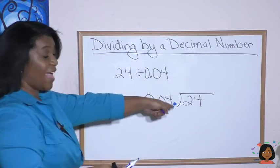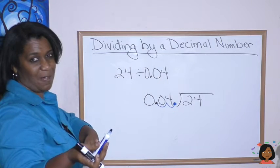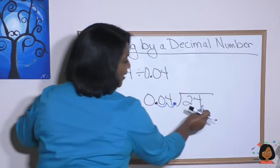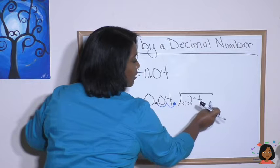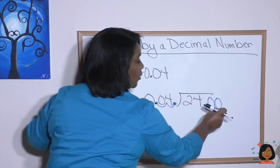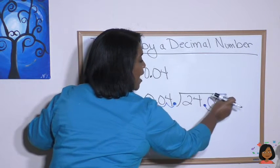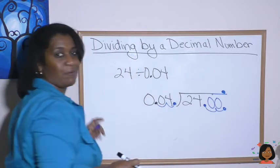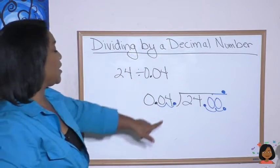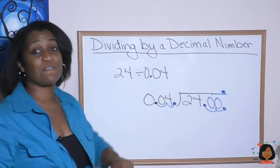But it also means we need to move that decimal two spaces to the right. I know you don't see it yet, but it's right here. It's right after the four. So let's put two spaces in so we can move it two spaces. And boom. Put it up top. Now our problem is 4 into 2400.